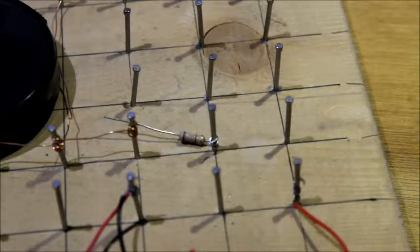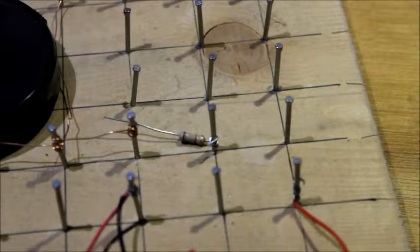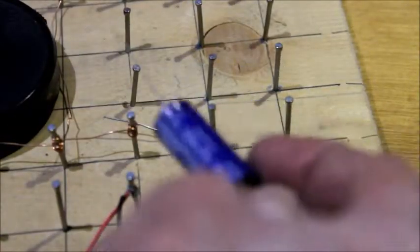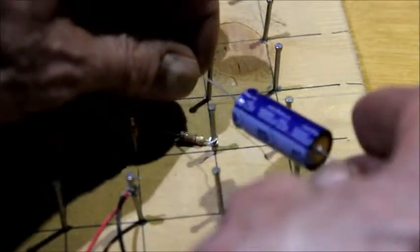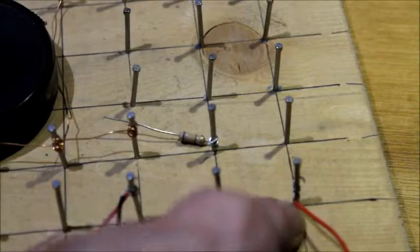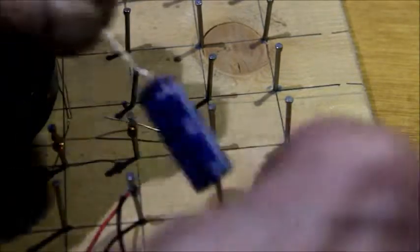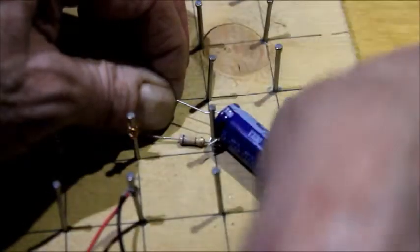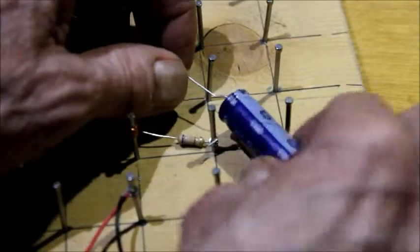Suppose we want to attach another component here. Let's try this big old electrolytic capacitor. Suppose I want to wrap that between this red wire here, which would come from a battery, and this resistor. Now this is a pretty big component, but I can get it here. Am I getting the polarity right there?